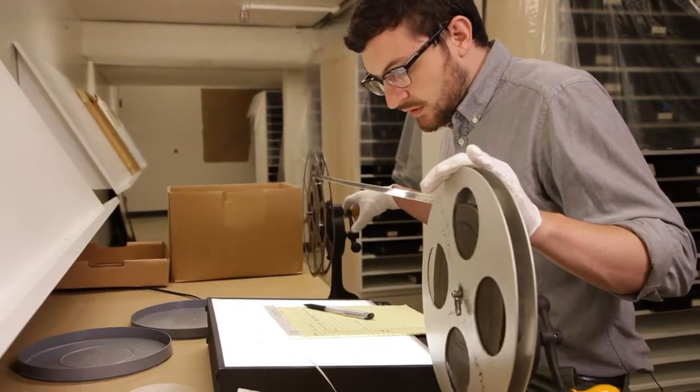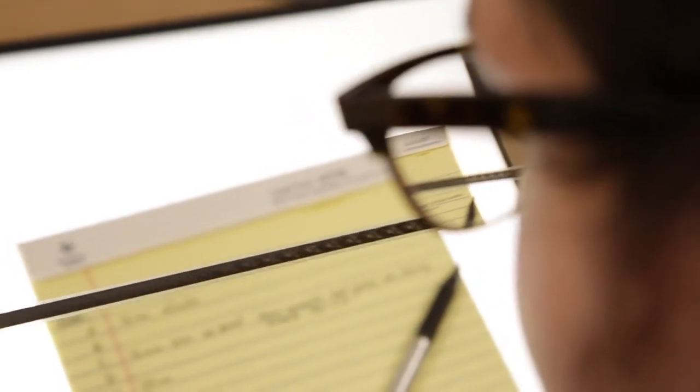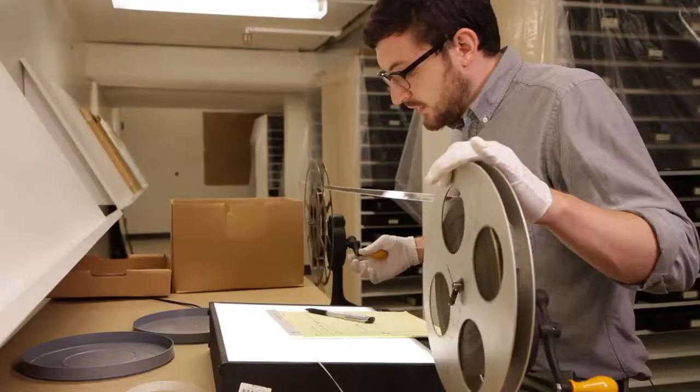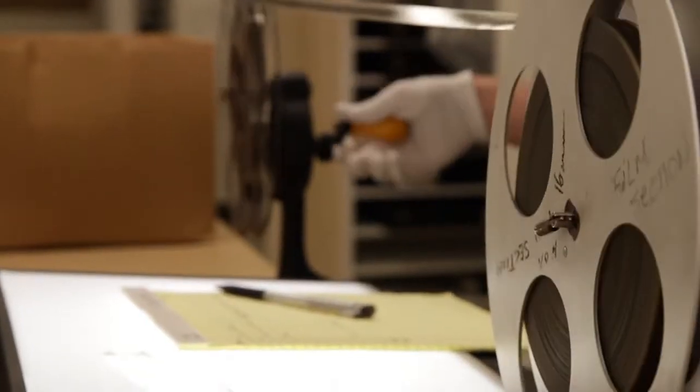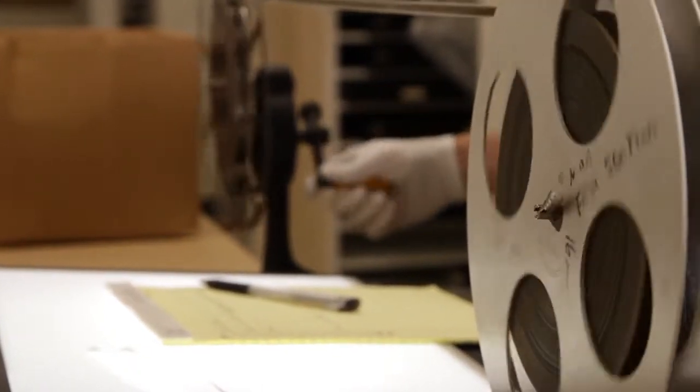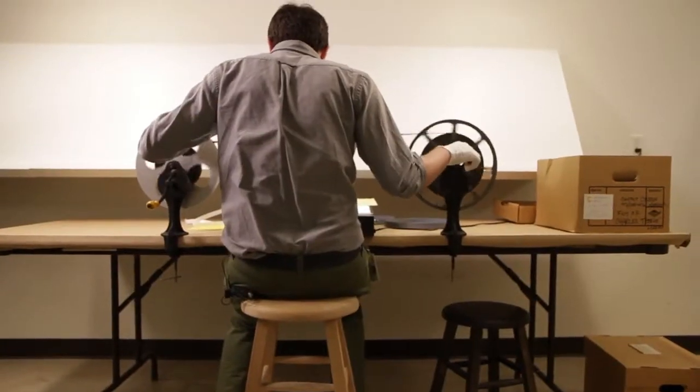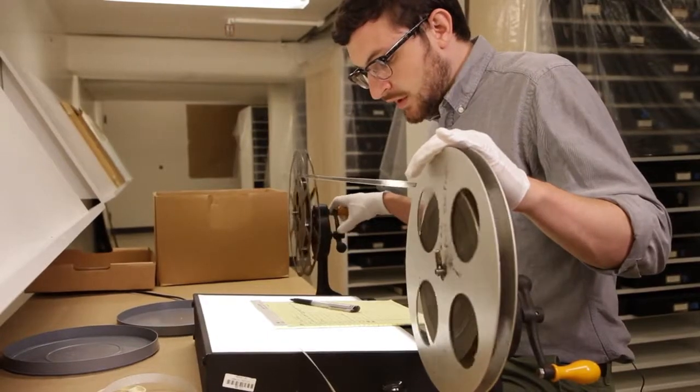These prints are the only copies in existence, as far as we know. What we'll need to do is send these to a film lab, where the prints will be used to create duplicate negatives, and then from those negatives we will create a new positive print. And we'll also have a video transfer made so that we can show this more easily on DVD and eventually on digital media.